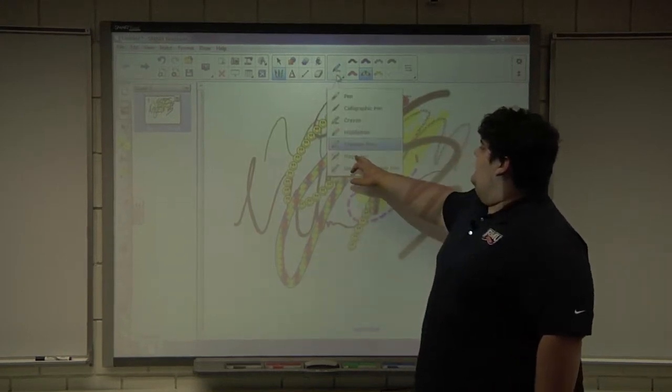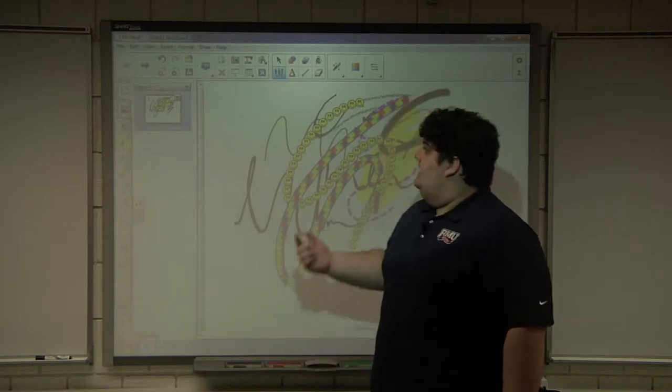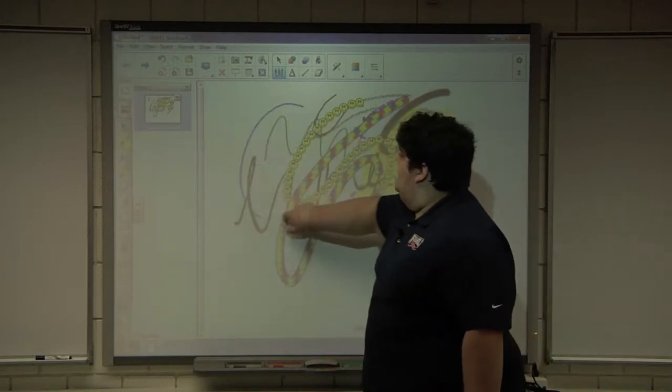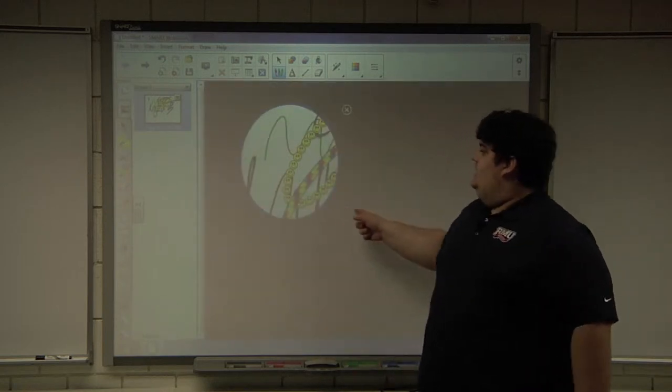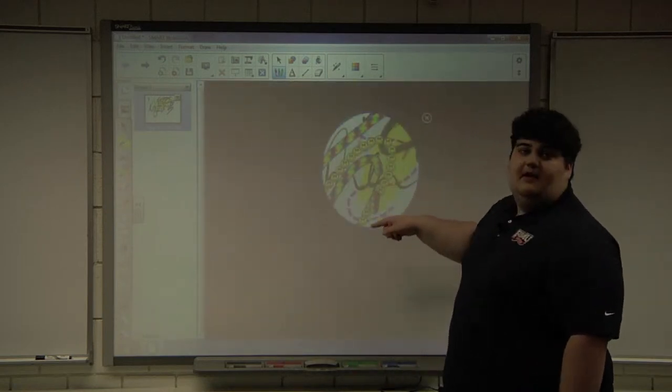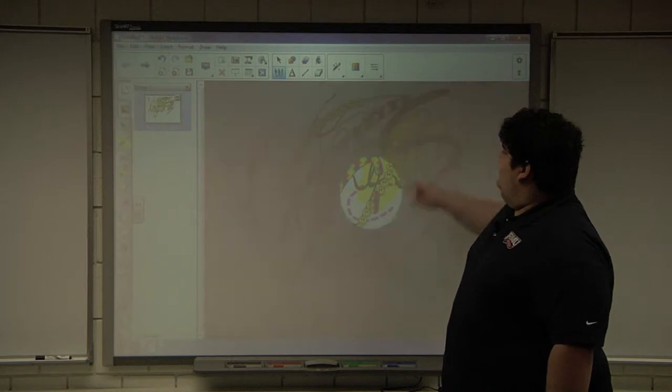The next option is magic pen. We'll click on that. There's three different functions of the magic pen. The first one is if you draw a circle it's going to make a spotlight tool. Basically you can just move it around, spotlight different things. You can change the size of it by holding in this little blue border and moving it around. And then we'll press X to get rid of it.